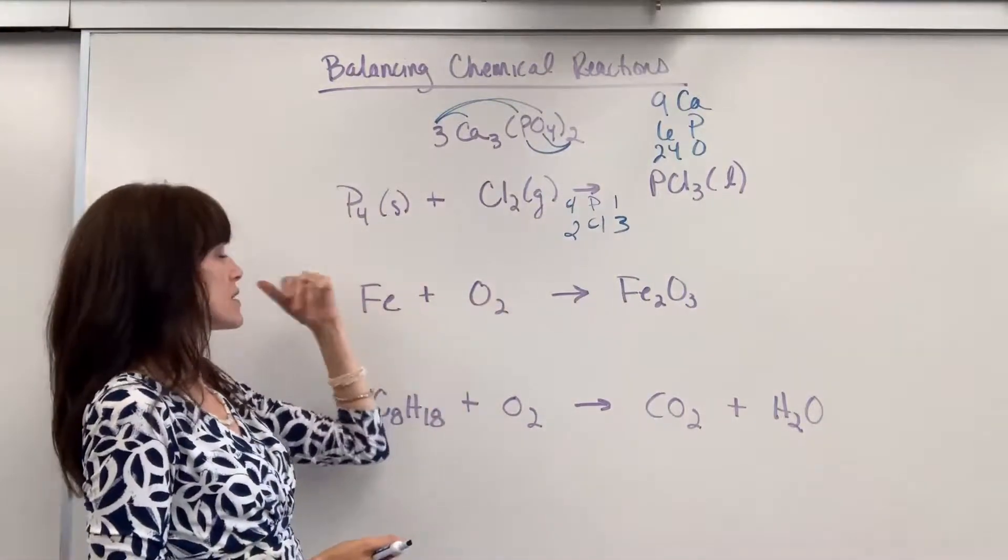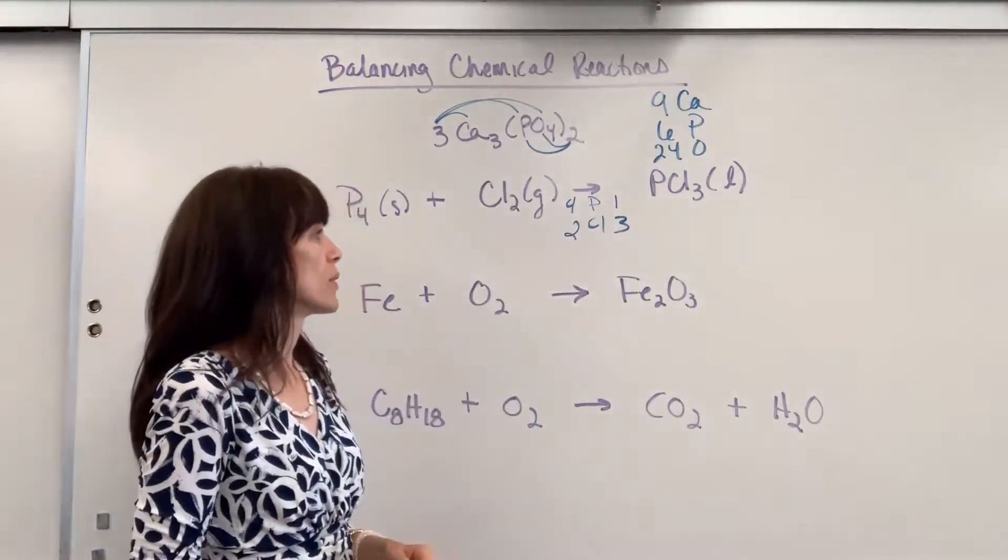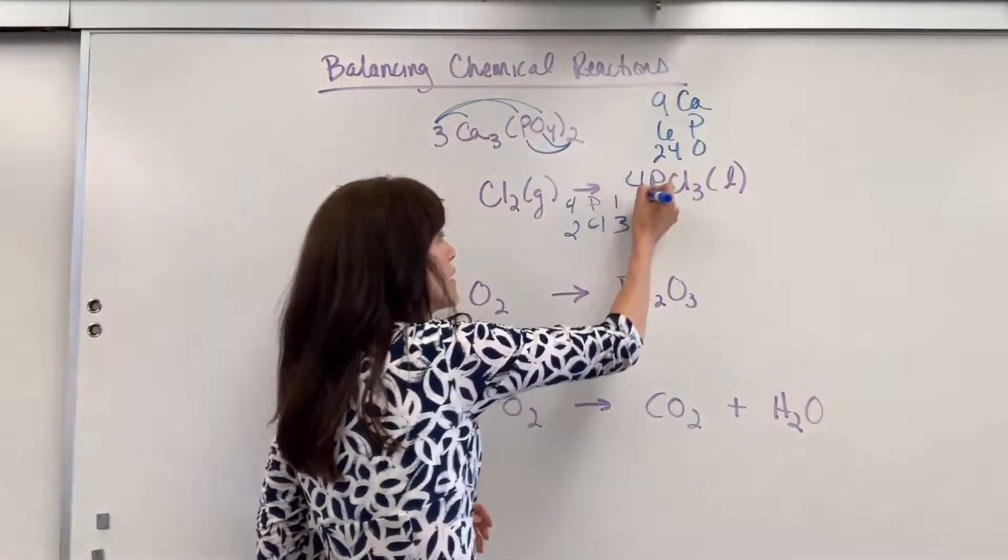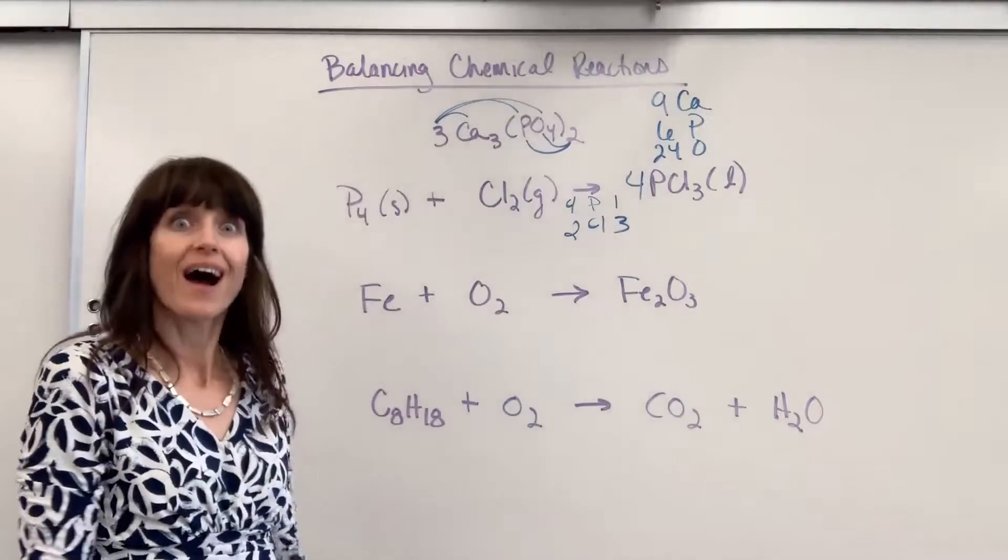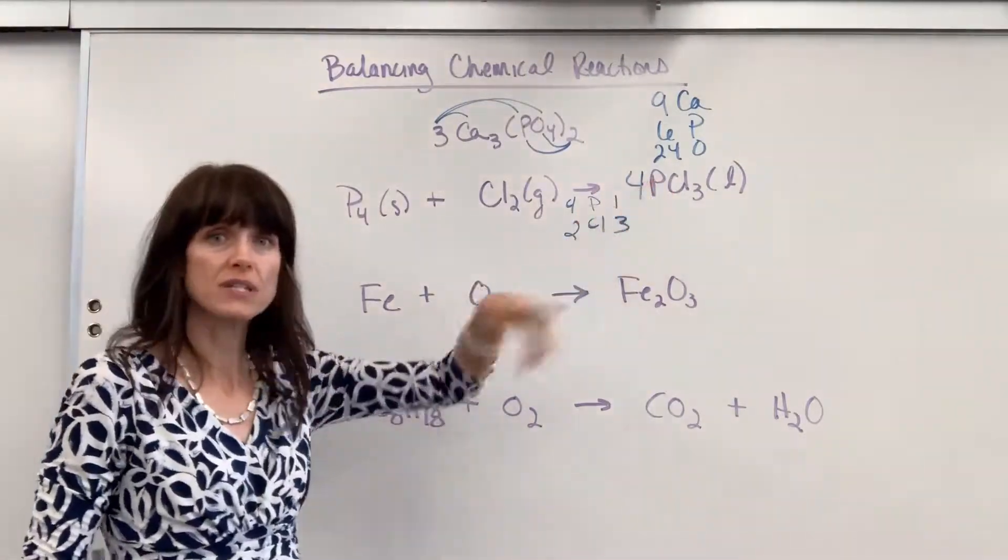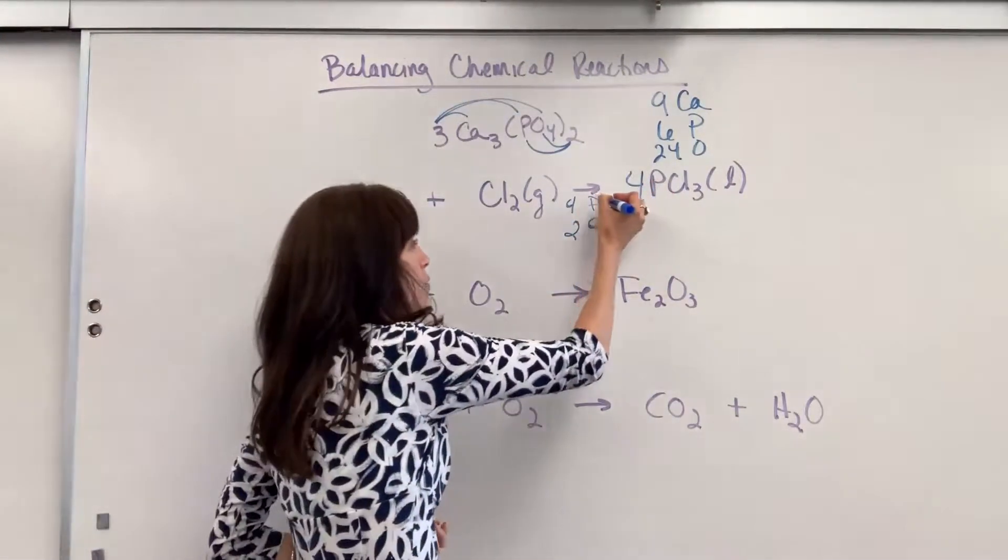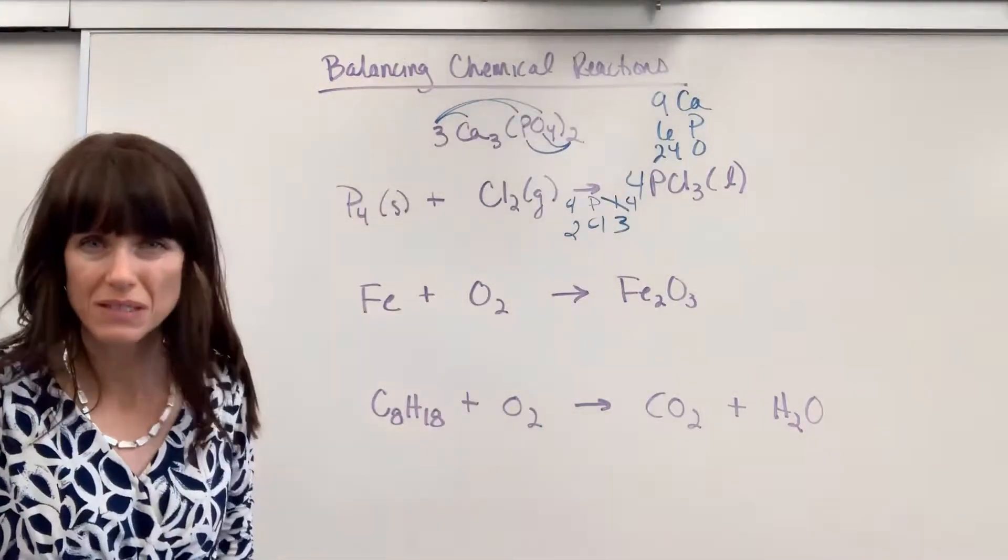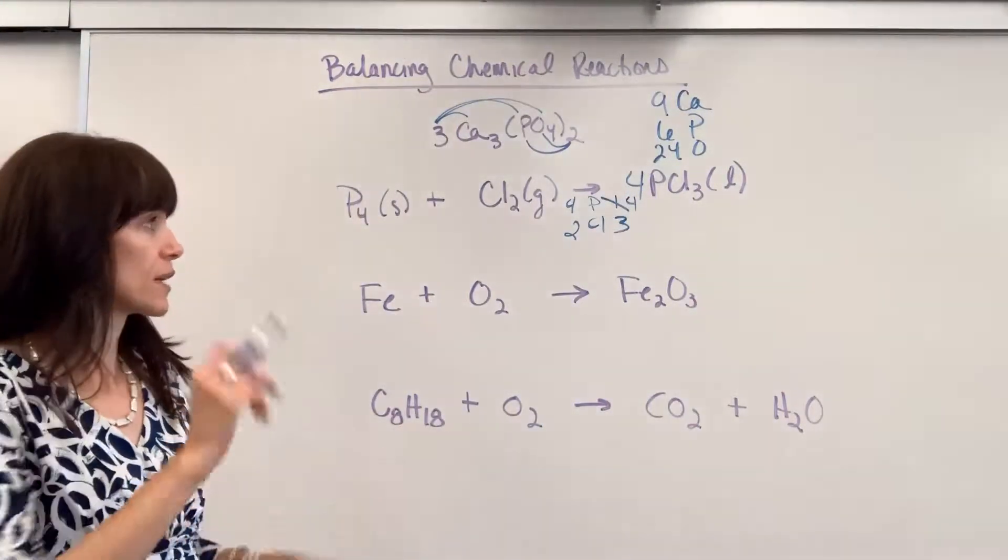So if I have four phosphorus on the reactant, only one on the product, I know I have to multiply by four. So I put a four in front of the phosphorus. I now have four phosphorus. Now to keep track of this, I cross out the one and I write a four. Don't take the time to erase. You're doing this fast. So just cross out that one and write the four.